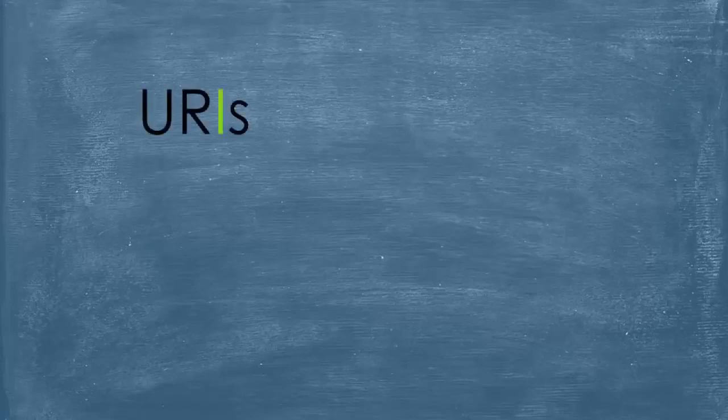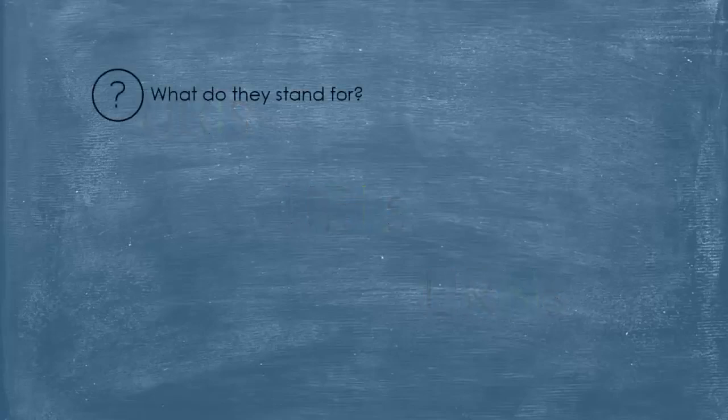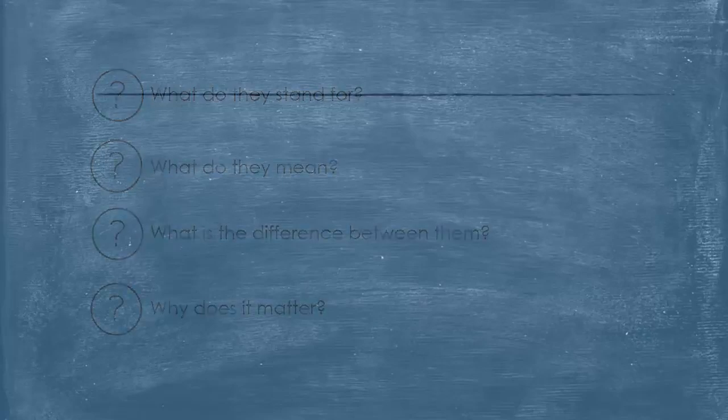Hey, what's going on guys, it's me again, Ayyub from the webdev cave. Welcome back to a new video and new step towards the expertise. In this short video, I will talk about URIs, URLs, and URNs, because I see a lot of confusion between the three. I used to confuse between them and they caused me a lot of headache, and I don't want you to go through that. Learning about these three terms and the difference between them can be quite useful in the long run. So, what do these three acronyms stand for and what do they mean? What is the difference between them and why does it matter? Let's start by defining each one of them.